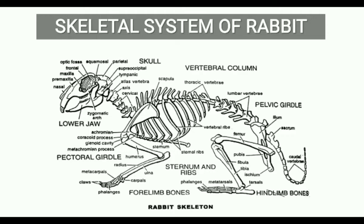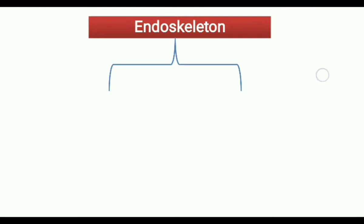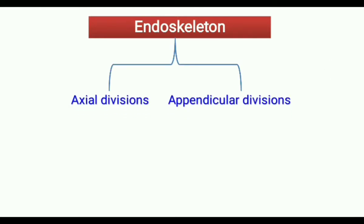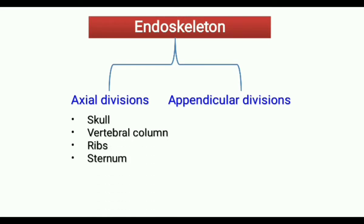Skeletal system of rabbit. The endoskeleton of rabbit has two divisions: axial divisions and appendicular divisions. Axial divisions contain the skull, vertebral column, ribs and sternum. Appendicular divisions comprise limb bones and limb girdles.